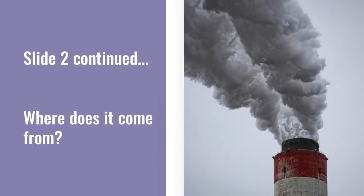Where does photochemical smog come from? Photochemical smog is produced when sunlight reacts with nitrogen oxides and at least one volatile organic compound in the atmosphere. Nitrogen oxides come from car exhaust, coal power plants, and factory emissions. VOCs are released from gasoline, paints, and many cleaning solvents.